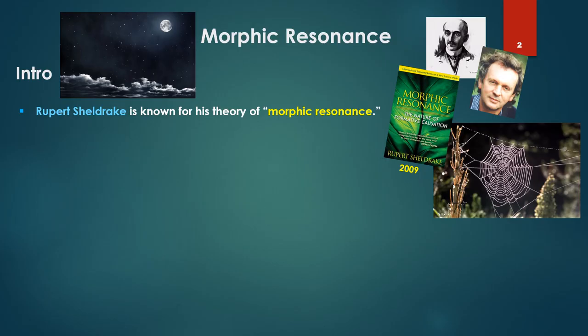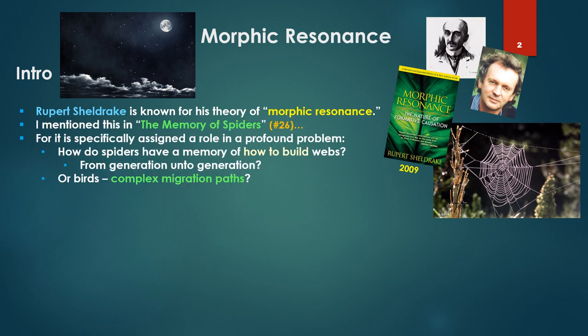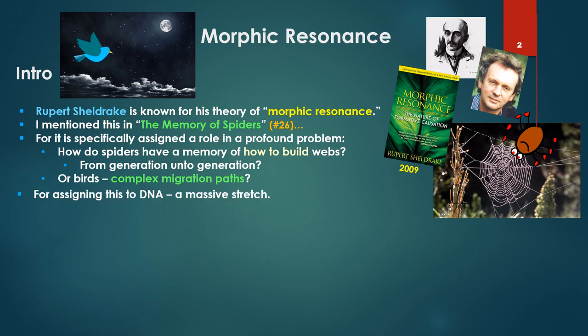Rupert Sheldrake is known for his theory of Morphic Resonance. I mentioned this in the memory of spiders in number 26, for it is specifically assigned a role in a profound problem: how do spiders have a memory of how to build webs from generation to generation? Or birds, complex migration paths from, say, Minnesota to Mexico? Assigning this very complex knowledge to DNA molecules alone is a very massive stretch.